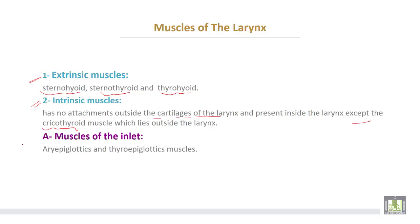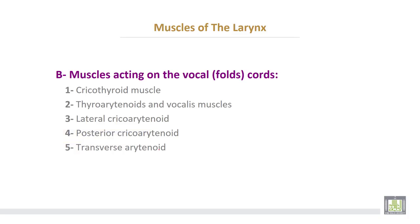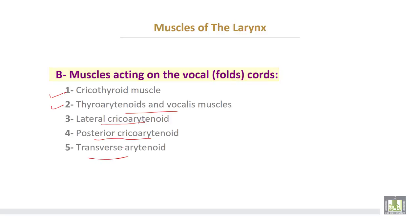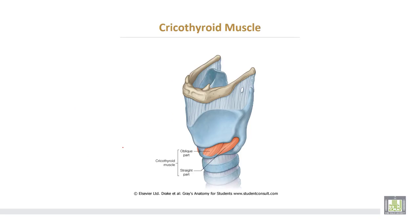The intrinsic muscles of the larynx are divided into two groups. The first group, called muscles of the inlet of the larynx, includes aryepiglottic and thyroepiglottic muscles. The second group consists of muscles acting on the vocal cords or vocal folds, including cricothyroid, thyroarytenoids, vocalis, lateral cricoarytenoid, posterior cricoarytenoid, and transverse arytenoid muscles.